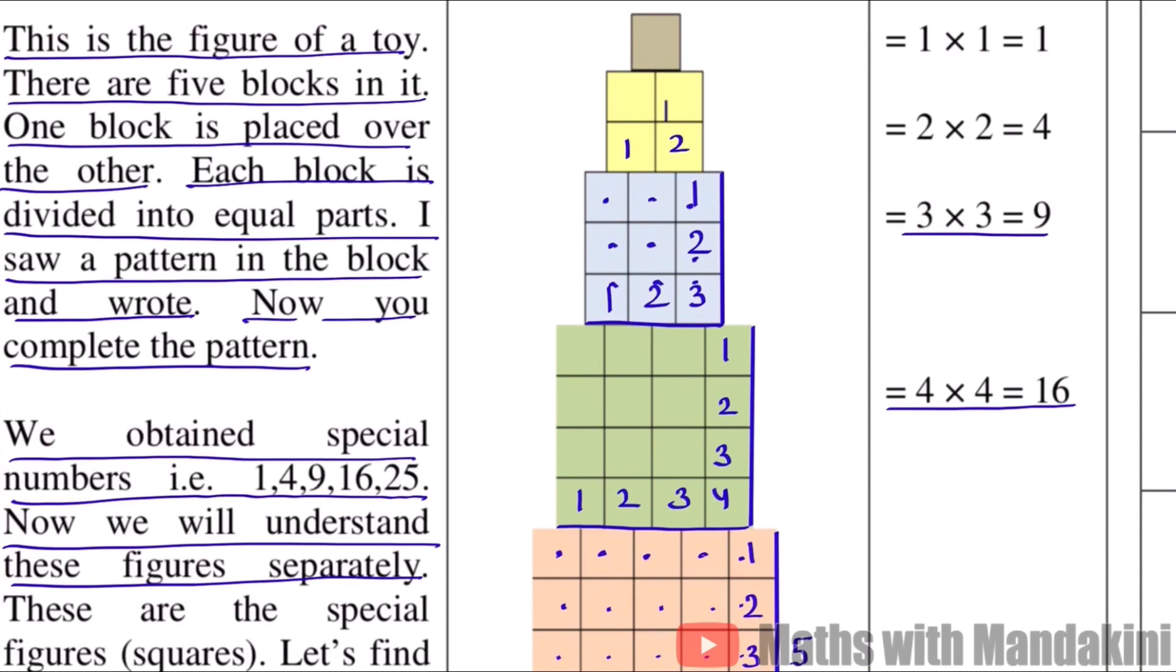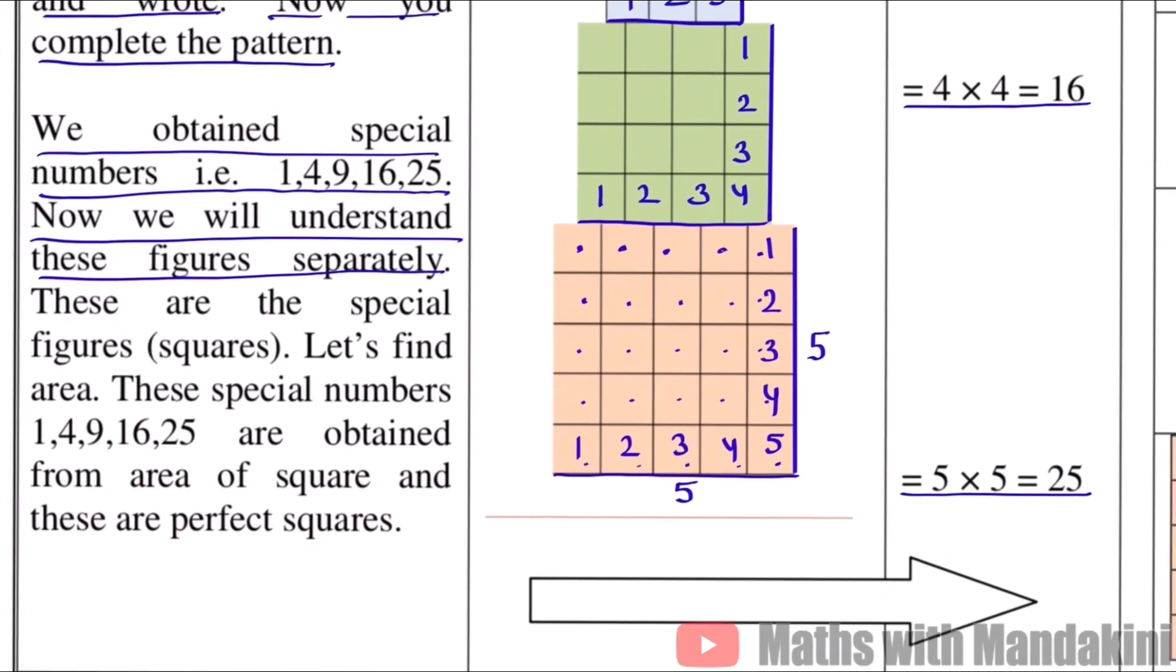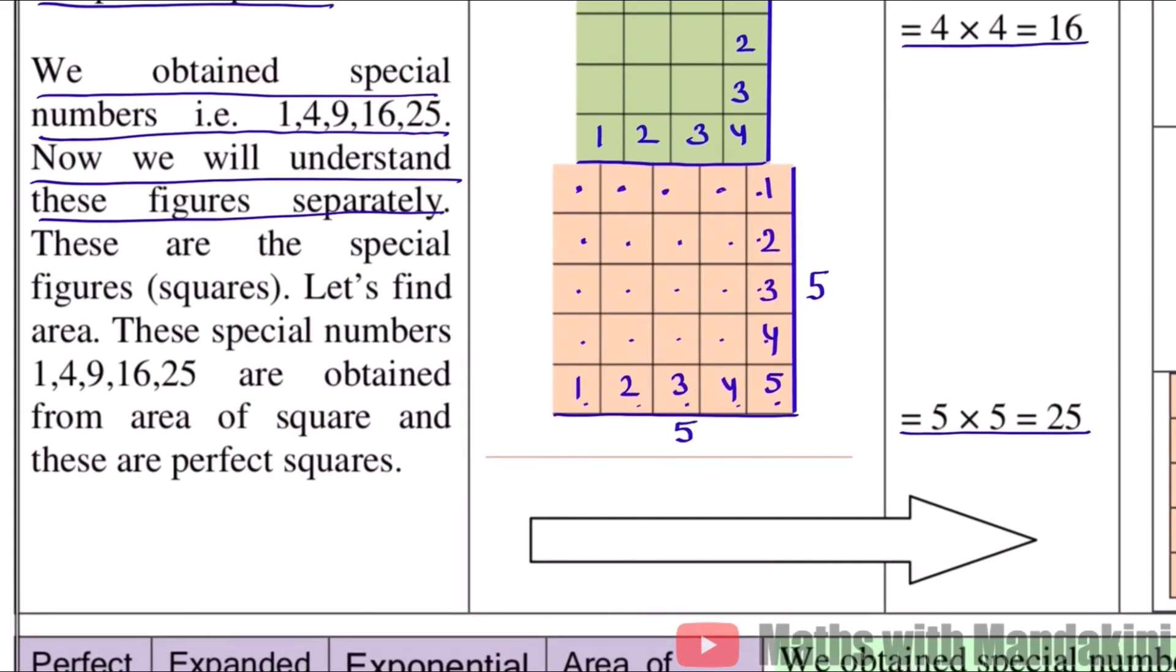One, two horizontally and one, two vertically. Here, clearly, 2 into 2 is 4, and there are 4 equal parts. And this one is the whole, so 1 into 1 is equal to 1. So this is 1, 4, 9, 16, 25. These are our special numbers.